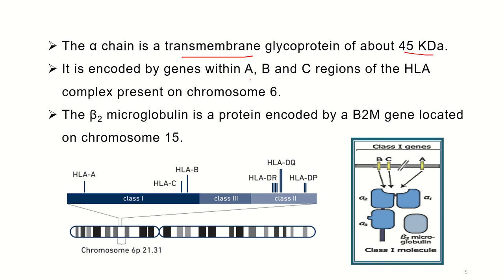The alpha chain is encoded by genes within the A, B, C region of the HLA complex, which is present on chromosome 6. In the last video we saw that in humans the MHC complex is located on the short arm of chromosome 6, and this MHC complex is divided into three regions: class 1, class 3, and class 2. The class 1 region has three sub-regions designated as HLA-A, HLA-B, and HLA-C.